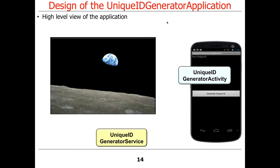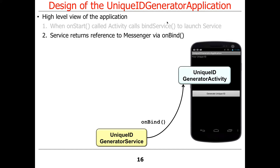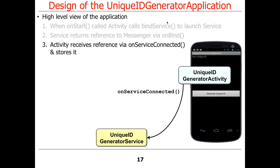Here's a high-level view. That picture is called Earthrise — taken from one of the Apollo missions, a very famous picture. When you start the application, the onStart call in the activity causes the activity to bind to a service, which launches the service. That causes the onBind hook method to be called in the service, which returns back a messenger to the client activity via the onServiceConnected call. That's how things get connected — that's the binding process, a handshake-based binding process.